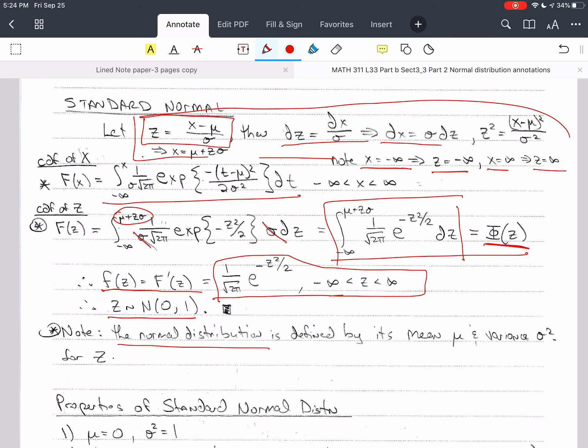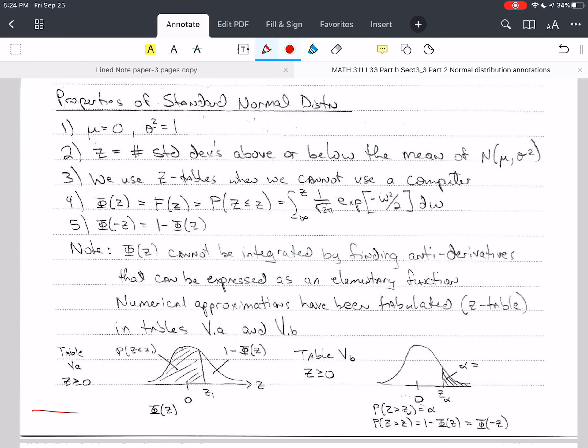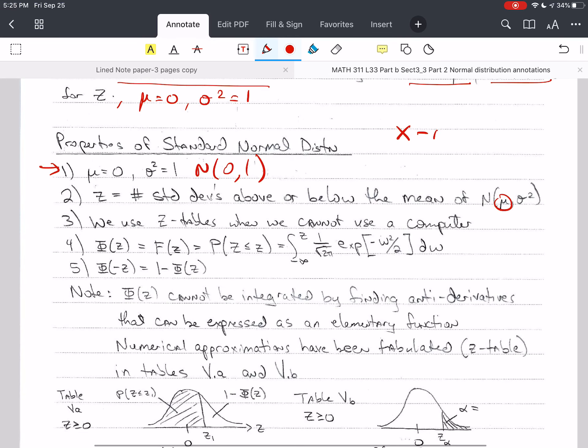So the normal distribution is defined by its mean mu and its variance sigma squared. For z, mu equals zero and sigma squared equals one. So the properties of the standard normal distribution, mu is zero, sigma is one, that's something to know. z happens to be the number of standard deviations above or below the mean, mu, because we're taking a value x minus mu, and dividing by sigma. So this is the difference, or the distance, that x is from mu in the positive or negative direction, divided by the value of the standard deviation. So this gives me the number of standard deviations away from the mean, either positive or negative.